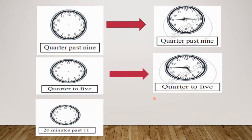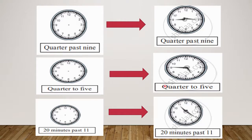The fourth one is 20 minutes past 11. Here you can see we draw the short hand on 11 and the long hand on 4, giving 20 minutes past 11. Like this you will draw the hands on the clock.